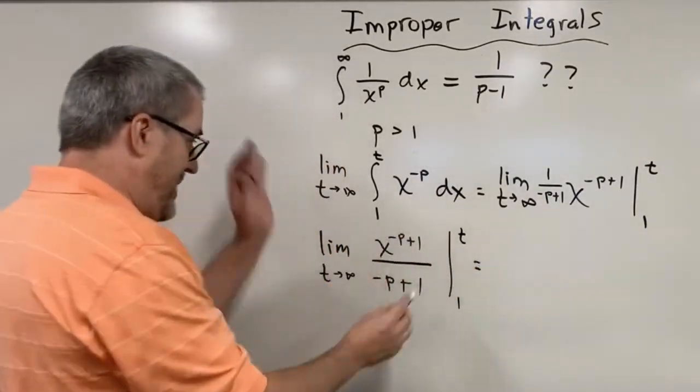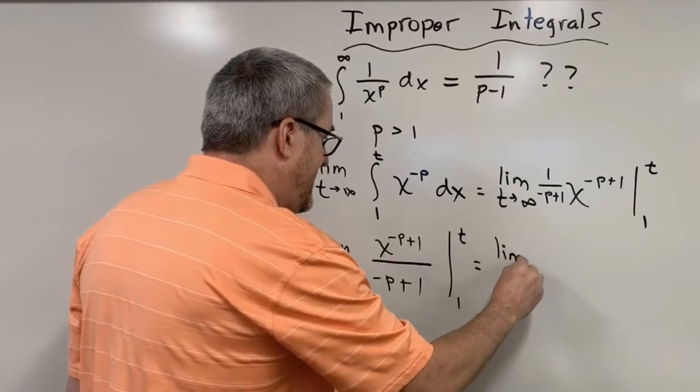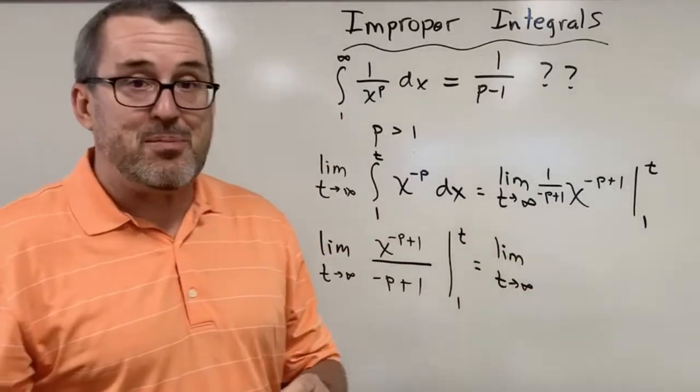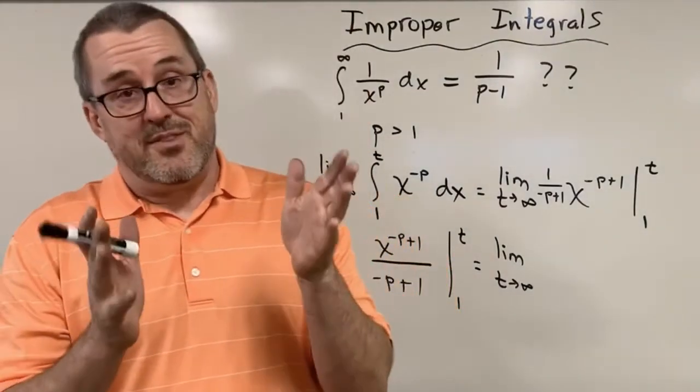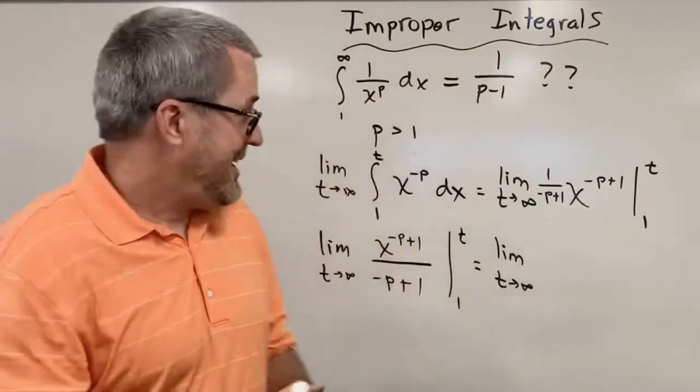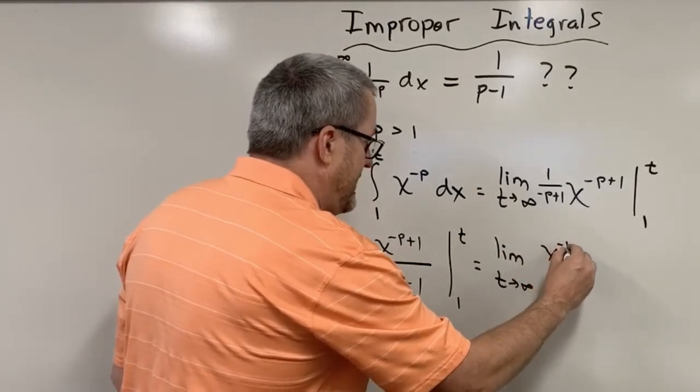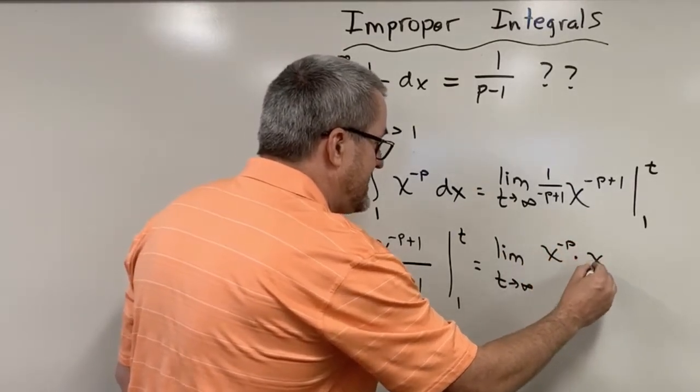But first, let's make one more algebraic move here. Let's say limit as t goes to infinity. Now, x to the negative p plus one. There's some rules of exponents that we can apply here and say this: it's the same as saying x to the negative p times x to the one.